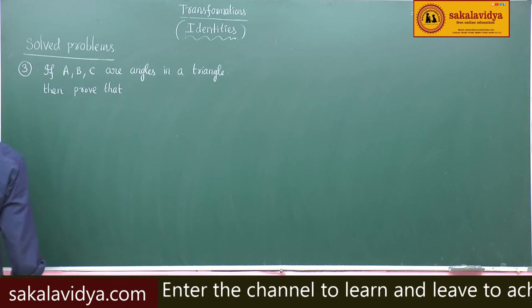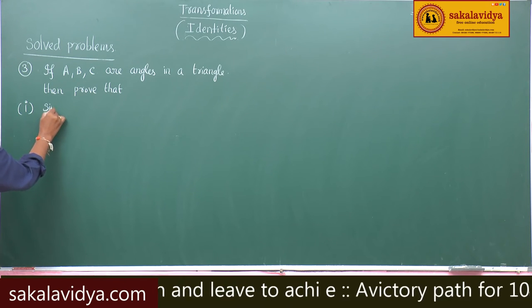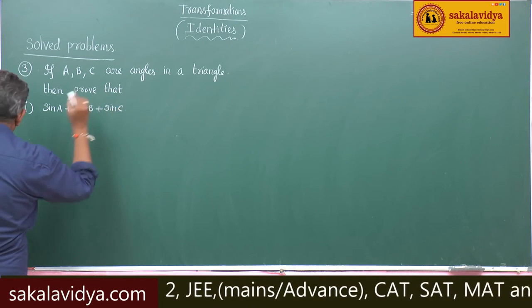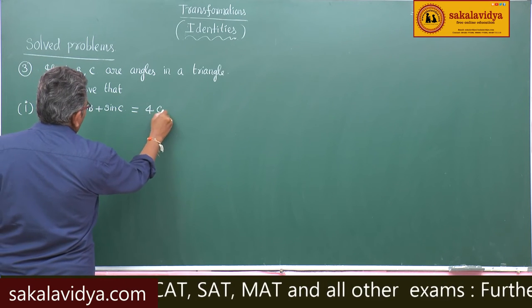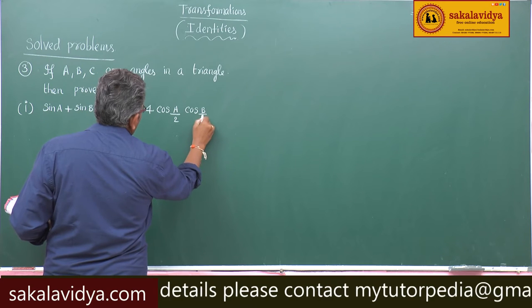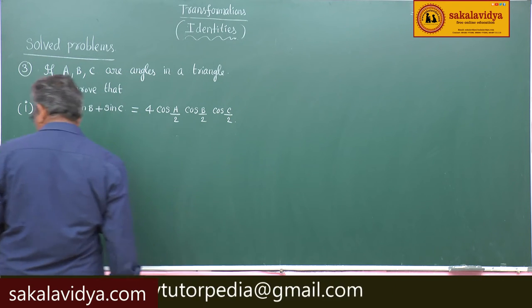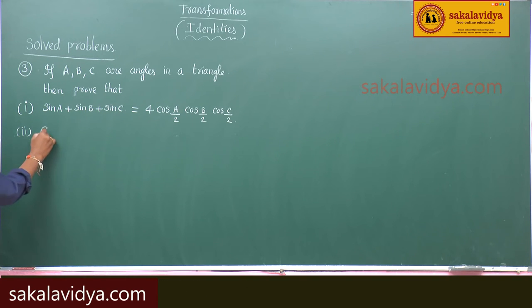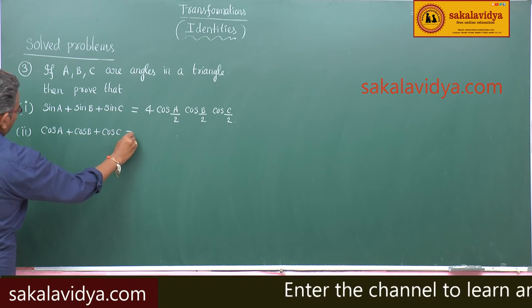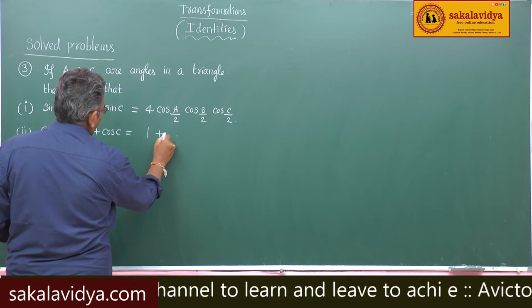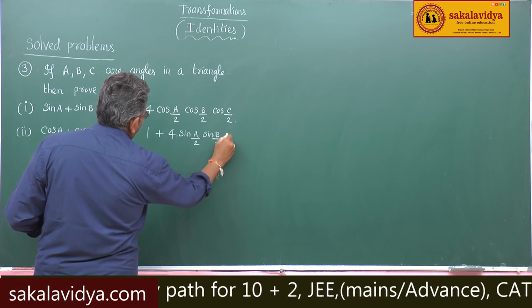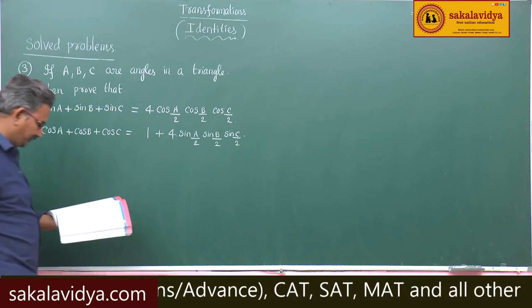then prove that: first, sinA + sinB + sinC = 4cos(A/2)cos(B/2)cos(C/2); second, cosA + cosB + cosC = 1 + 4sin(A/2)sin(B/2)sin(C/2).